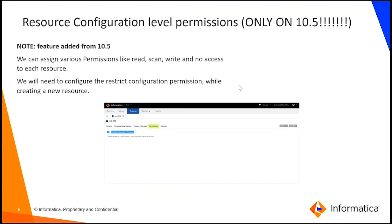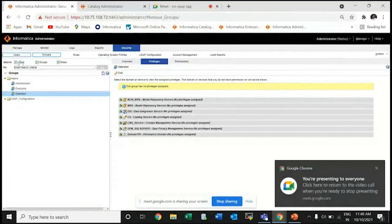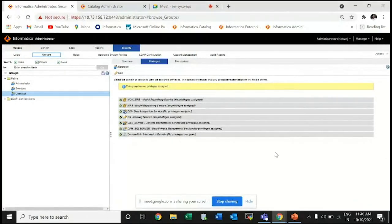All Permissions allows you to add data domains, business terms, and assets in EDC, and also view the value frequency for these assets. Next is resource configuration level permissions, where you can assign Read, Scan, Write, and No Access permissions at a resource level. Note this feature is only added from version 10.5. You need to configure restrict configuration permissions by creating a new resource, then go to the Security tab, select the resource and users, and provide permissions accordingly.